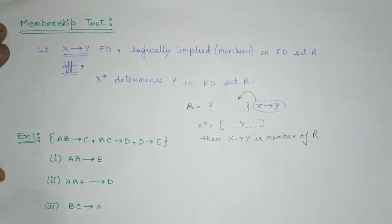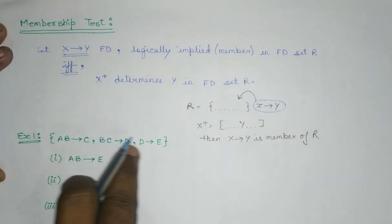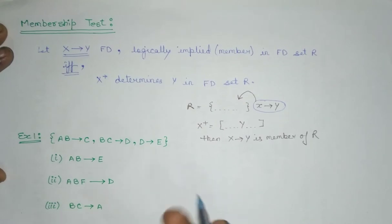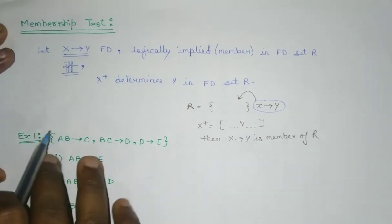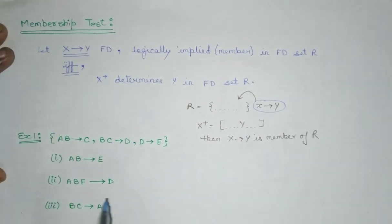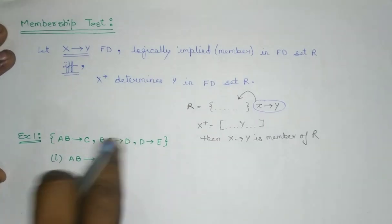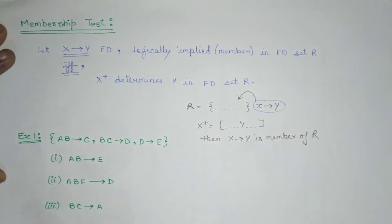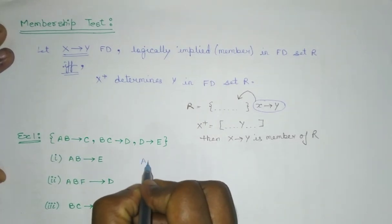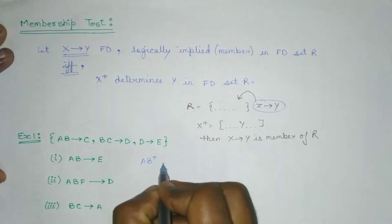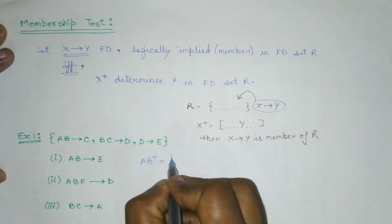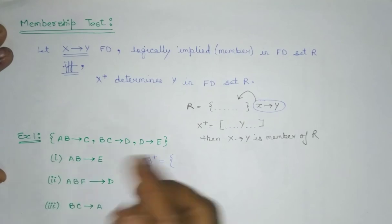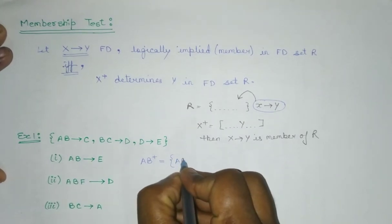So here I am having given functional dependency set. So this is a functional dependency set of a relation, of any relation, the name is not given for this particular relation. So we need to check whether AB implies E belongs to this particular set or not. How we can find out? For that, we need to find out the closure of AB. So let's find out the closure of AB. Closure of AB will be AB. It is trivial.